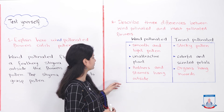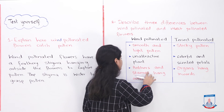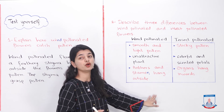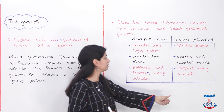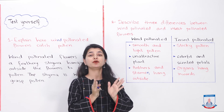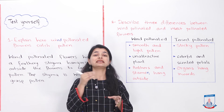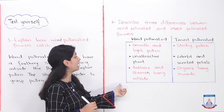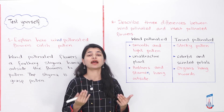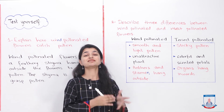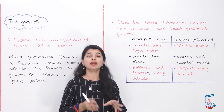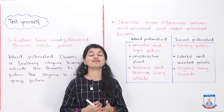The third difference: in wind pollinated plants, the anthers and stamens hang outside the flower. In insect pollinated plants, the organs hang inwards. The reason is that insects need to go inside to suck nectar, whereas in wind pollinated plants the anthers and stamens are hanging outside so the wind can easily take the pollen grains. The positioning of their organs is very different between the two types.